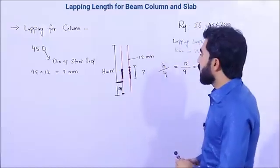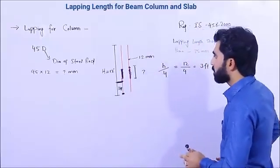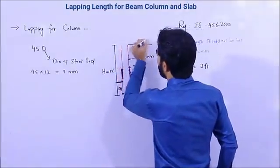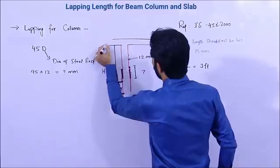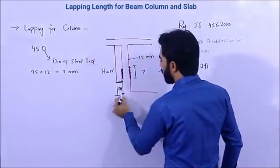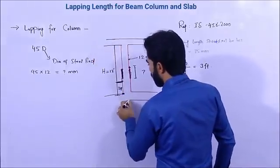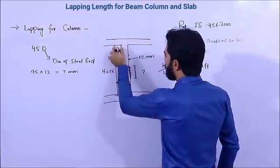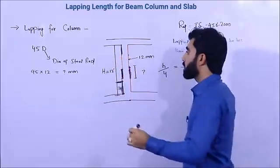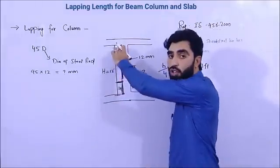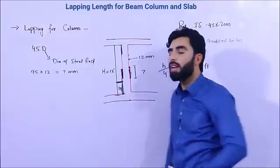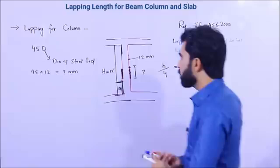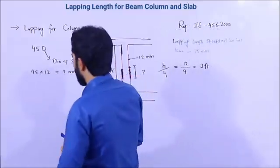If you provide lap length at the very end — at the top where a slab is, or at the bottom where the lower floor is — that is wrong. Bending moment is maximum at the top and bottom, so the L/4 position (h/4 from bottom or top) is the best and correct place to provide lap length for a column.